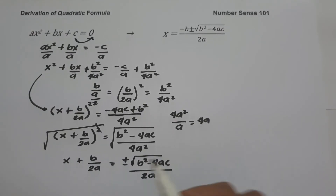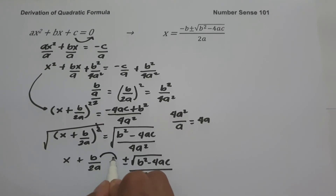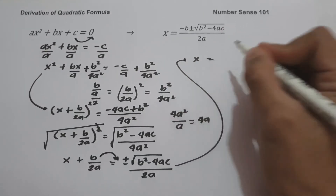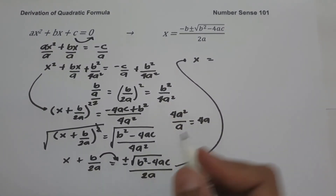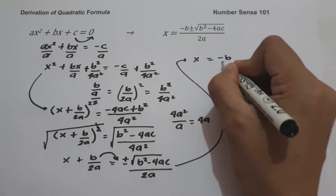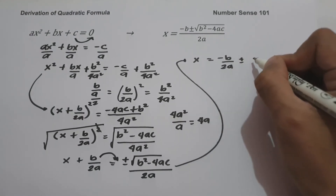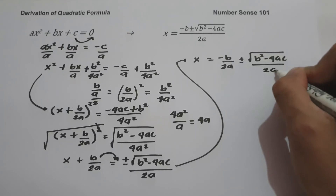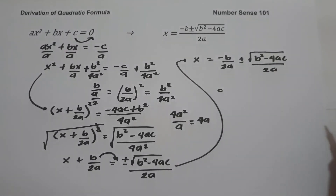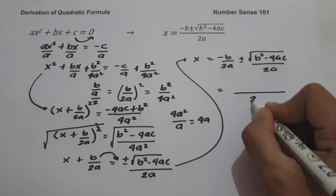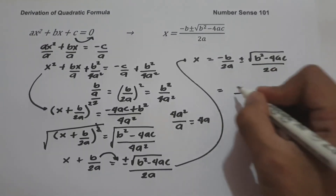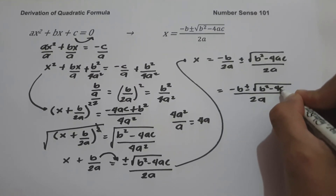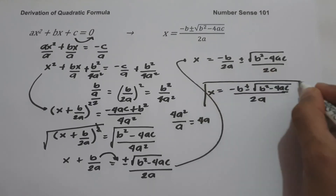The next step is to move b/2a to the other side of the equation, where it becomes negative. So x equals negative b/2a plus or minus square root of b² − 4ac all over 2a. Since we have the same denominator, we combine them: x equals negative b plus or minus square root of b² − 4ac, all over 2a. This is the quadratic formula.